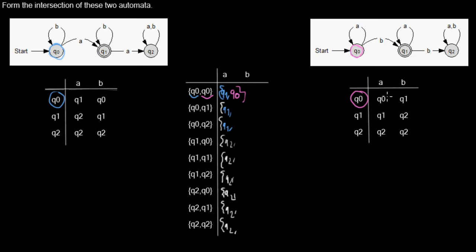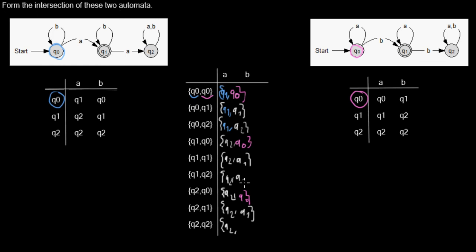Now looking at the right automaton: with Q2 when we read an A we go to Q2. In Q0 in the right automaton reading an A we stay in Q0, so I write Q0 here. For Q1 in the right automaton reading an A we stay in Q1. For Q2 reading an A we stay in Q2. Now we fill out the same for B — in the left automaton, in Q0 reading a B we move to Q0.